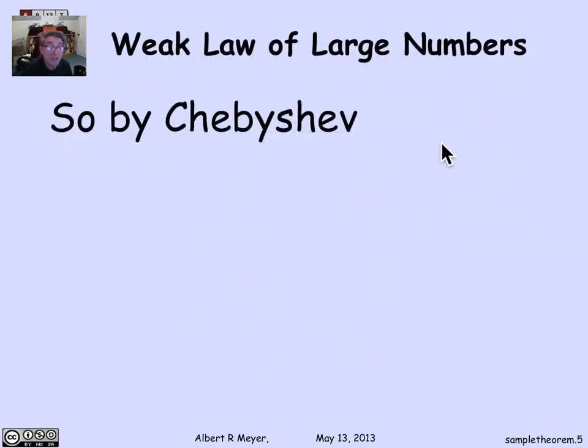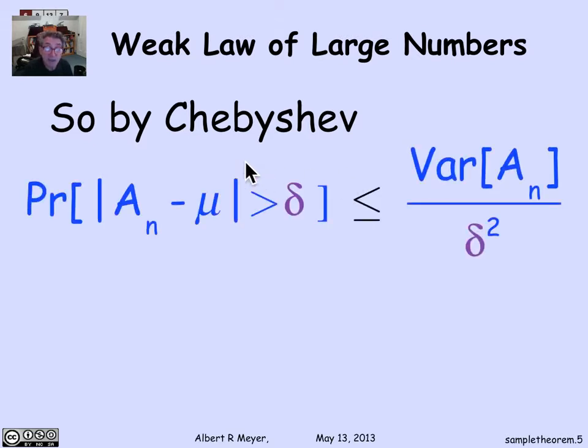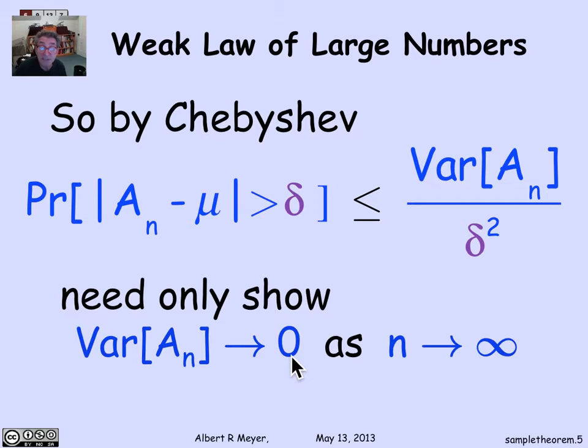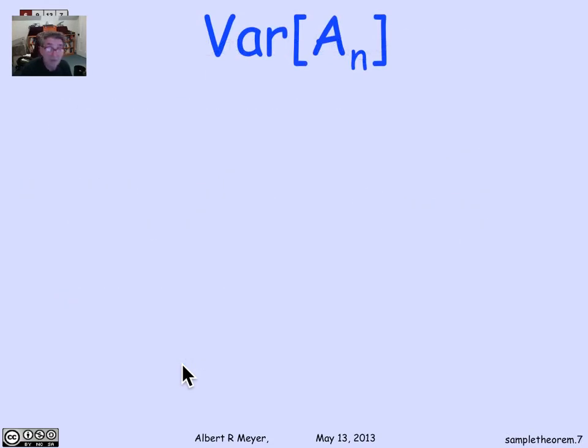Now, that lets us apply the Chebyshev bound to the random variable A_n. Because now we know what its mean is, and its mean is independent of n. We can apply Chebyshev to the probability that the average of n trials differs from its mean by more than delta. And according to Chebyshev, that's bounded by the variance of the average divided by delta squared. So I will have proved the law of large numbers if I can prove that the limit as n approaches infinity of the variance goes to 0. So we've reduced the proof of the law of large numbers to proving that the variance goes to 0 as n approaches infinity, where A_n is the average of n identically distributed variables with common mean mu and standard deviation sigma.